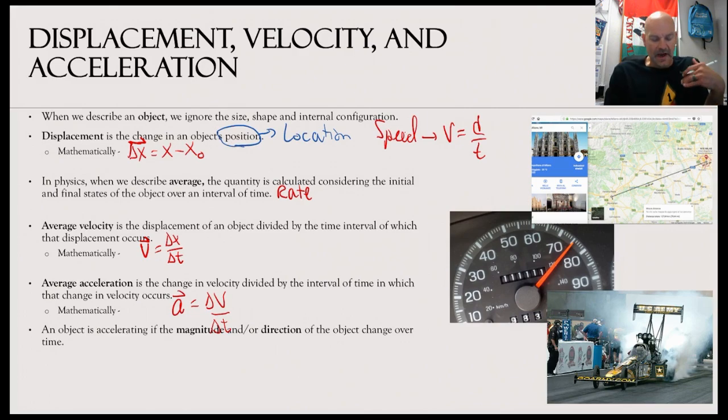Now, an object is accelerating if the magnitude and/or direction of the object changes over time. So what does that mean? You can play around with the magnitude. So I can keep the direction the same, but change the magnitude of which my velocity changes. Now, the other way you think about it is direction. If that changes as well, then we're technically accelerating.